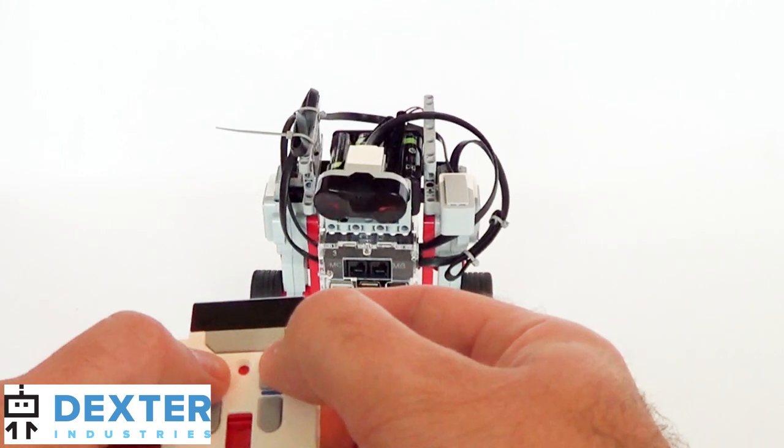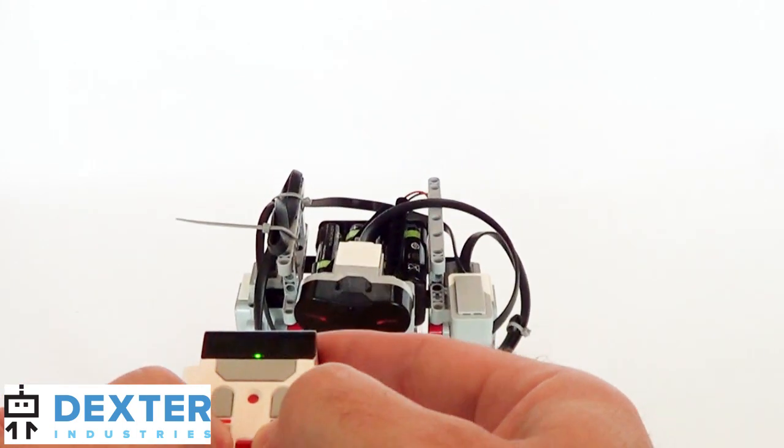Now you can move the robot around by controlling both the wheels.